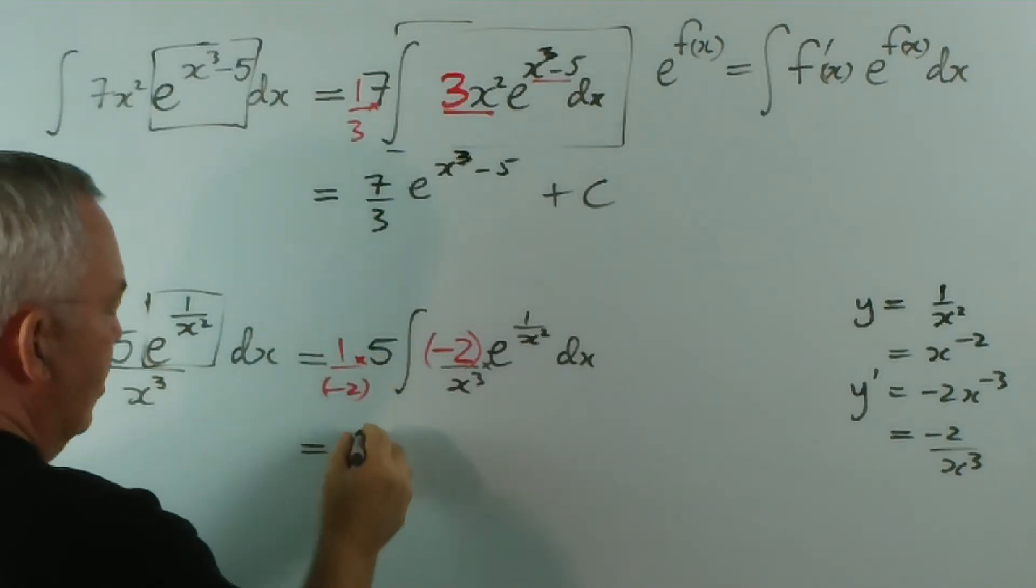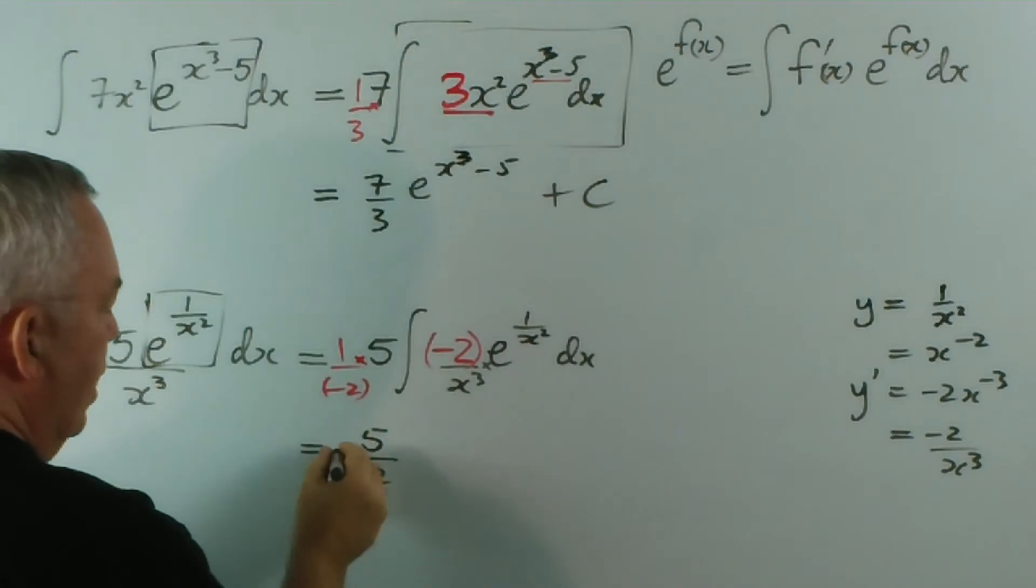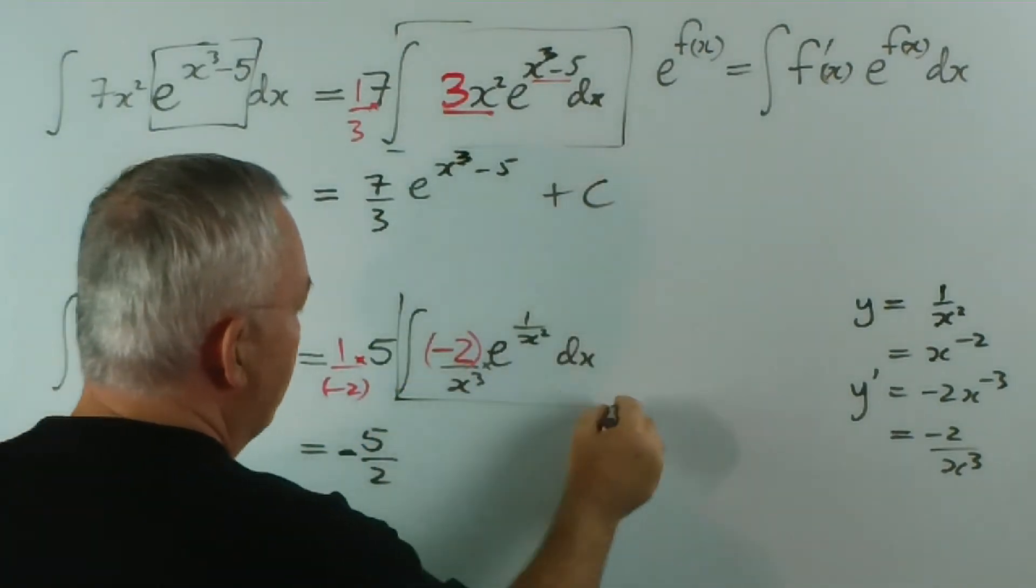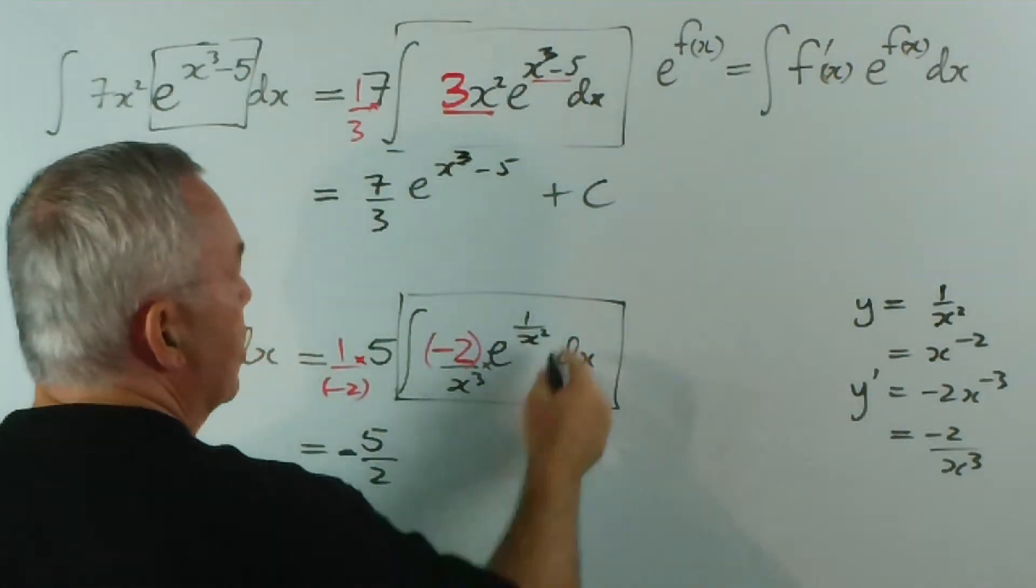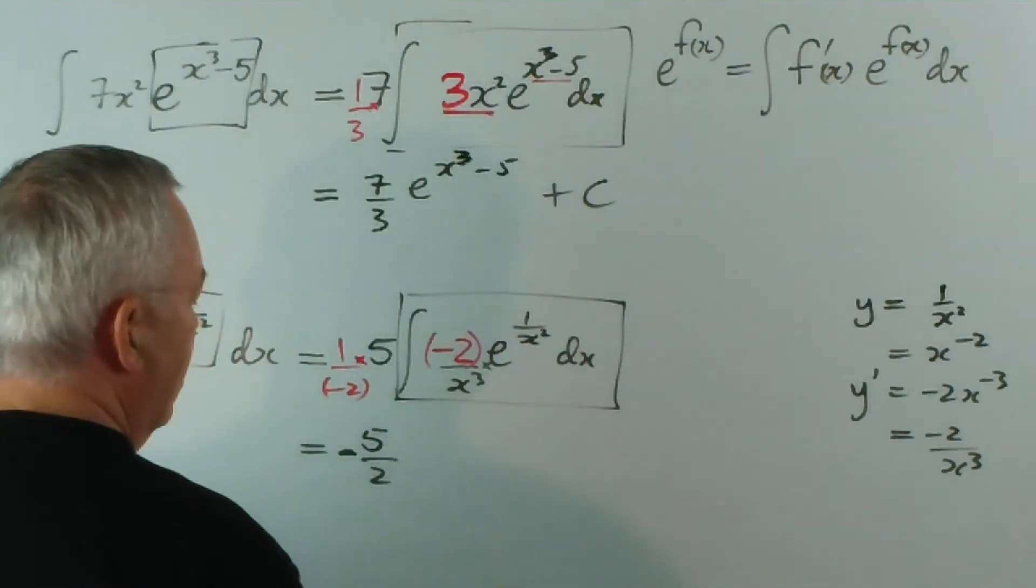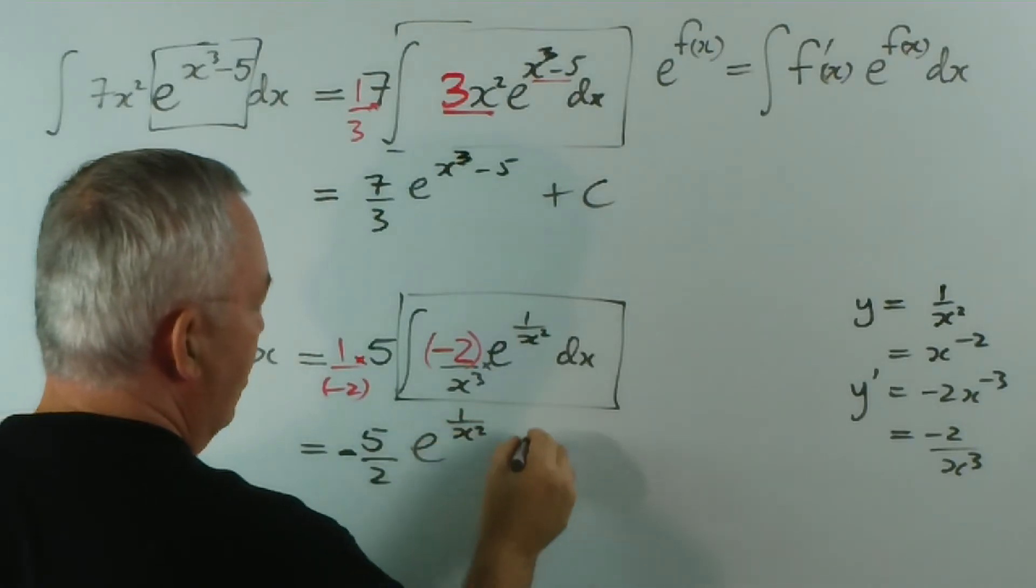This one, one times five is five. We have a two on the bottom, and a positive over a negative gives us a negative. And again, this now exactly matches this pattern here. So therefore, our integral will be exactly that function, e to the one on x squared plus c.